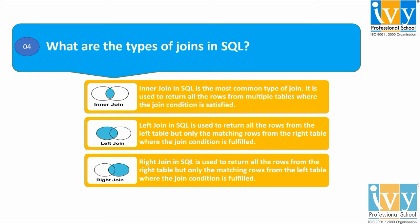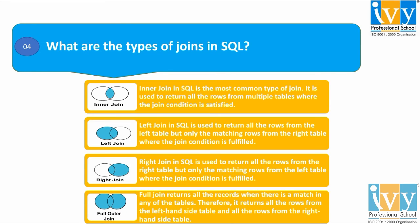Finally, the full outer join states that all records are returned when there is a match in any of the tables. Therefore, it returns all the rows from the left-hand side of the table and all the rows from the right-hand side of the table.